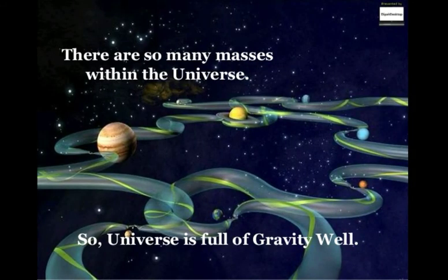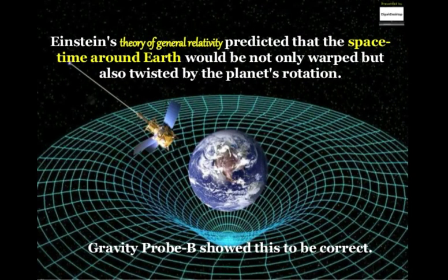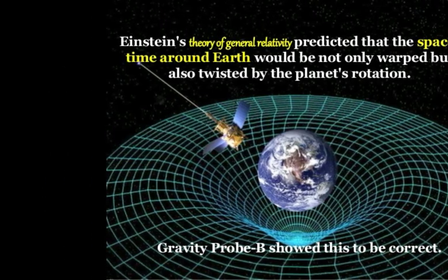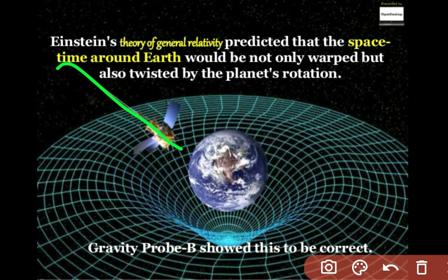There are so many masses within the universe, so the universe is full of gravity wells. The general theory of relativity predicts that space-time around Earth would be not only warped but also twisted by the planet's rotation. Gravity Probe confirmed this to be correct.